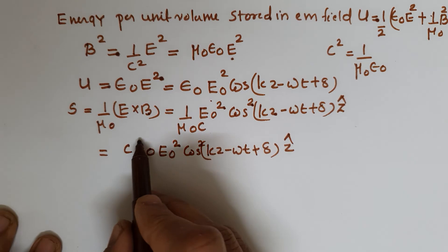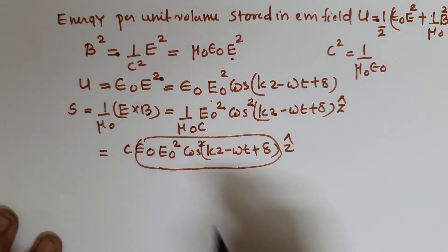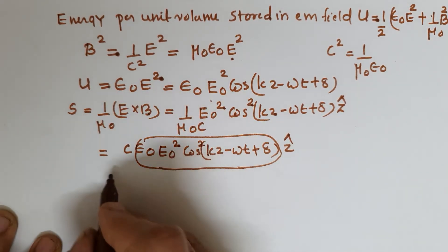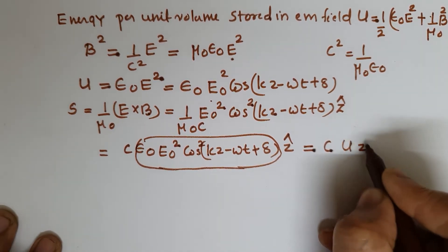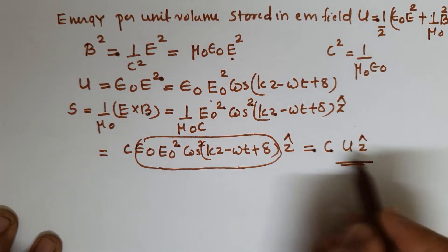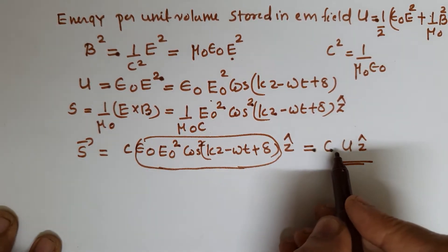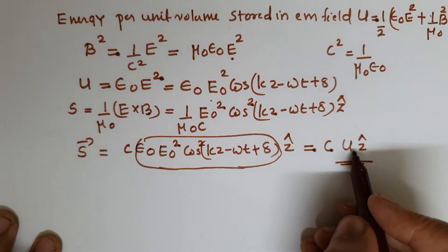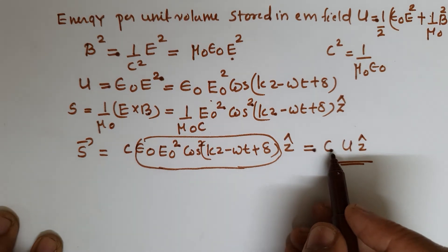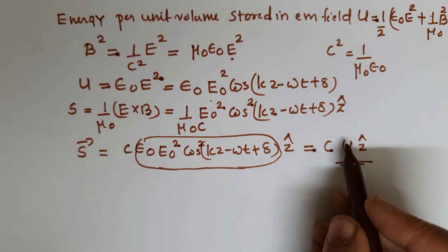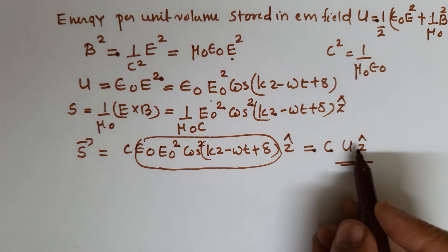Recognizing that ε₀E₀² corresponds to the energy density u, we can represent the Poynting vector as S = cu. That is, the Poynting vector can be expressed as the product of the velocity of the wave c and the energy density u.